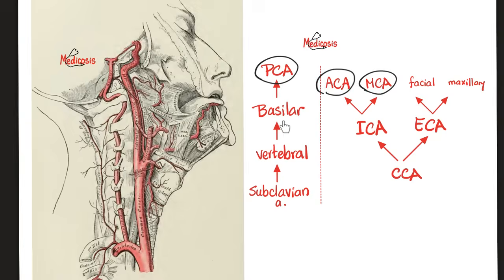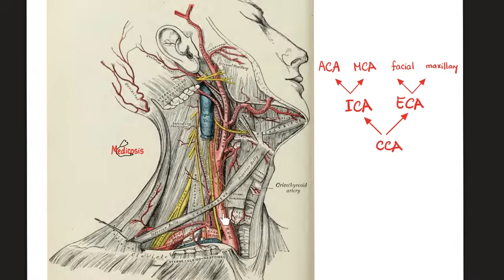Why do we call it the basilar artery? Because it runs on the basis pontis — the base of the pons — and also because it's located at the base of the brain.